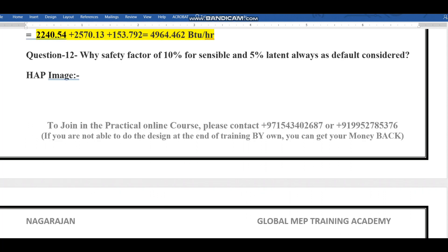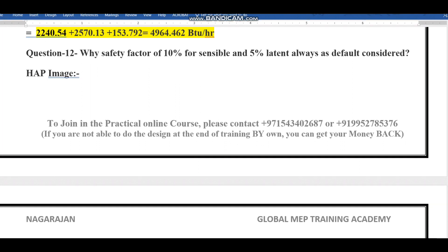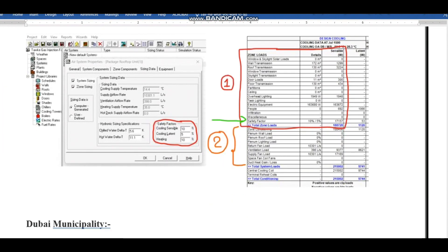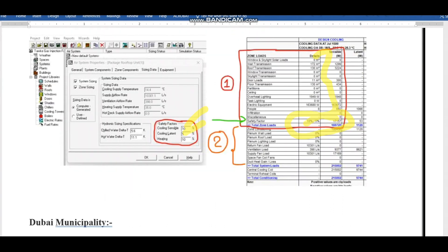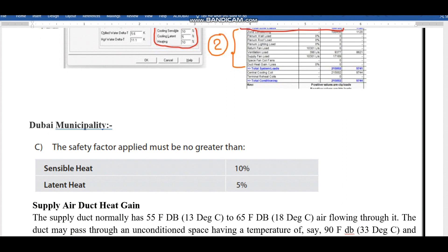The next question is why the safety factor of 10 percent for sensible and 5 percent latent is always considered as default. If you go to the HAP software there will be a bypass value. This 5 and 10 percent will be there over all the values. We need to know the reason behind considering the safety factor. I'll continue in the next video with the answer to this question. We have completed sensible load. Now we have latent load, how to find out the coil load, temperature, air flow rate, and total tons of refrigeration.